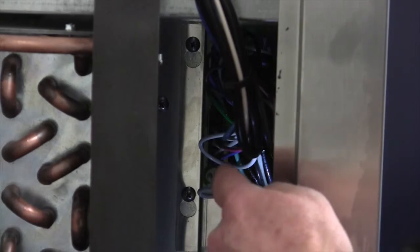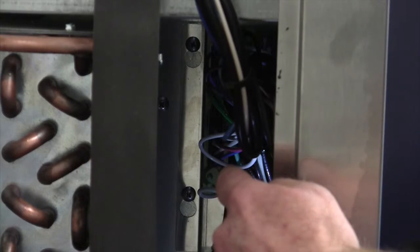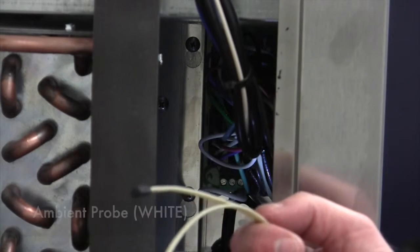If the control board needs service, it is accessible through the back of the unit. It is located in front of the condenser coil.